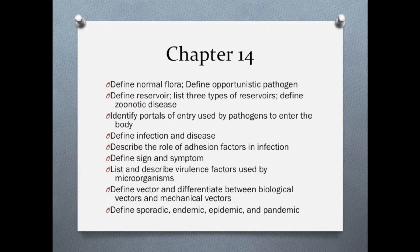You will need to be able to define vector and differentiate between biological vectors and mechanical vectors. Table 14.10 provides some examples of biological and mechanical vectors. Table 14.11 provides summaries of important terminology regarding modes of disease transmission. Students will need to differentiate between endemic, sporadic, epidemic, and pandemic. Figure 14.6 illustrates each of the different terms used for the occurrence of disease in a population.